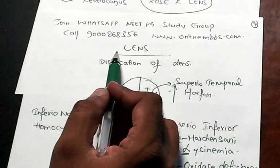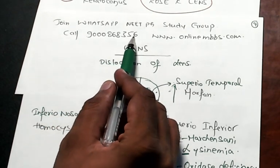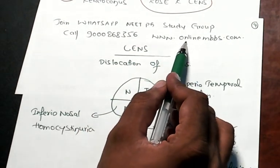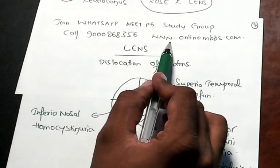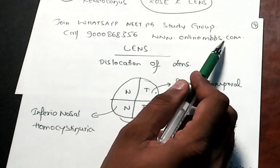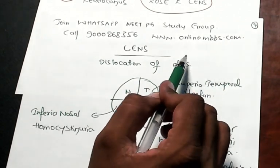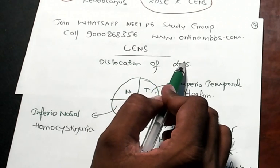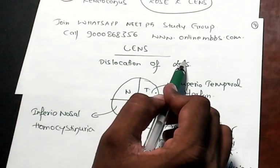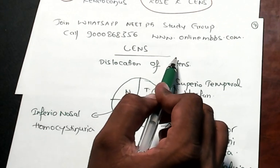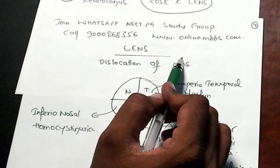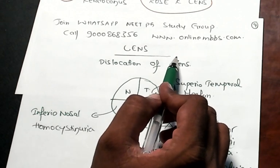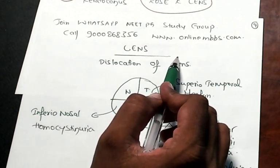So that is the reason doctor, please call 9000868356. Also look for the video library of onlinembbs.com. There are 953 topics, each with a PowerPoint attached to every video, and you have a great opportunity to do a quick cursorial revision.